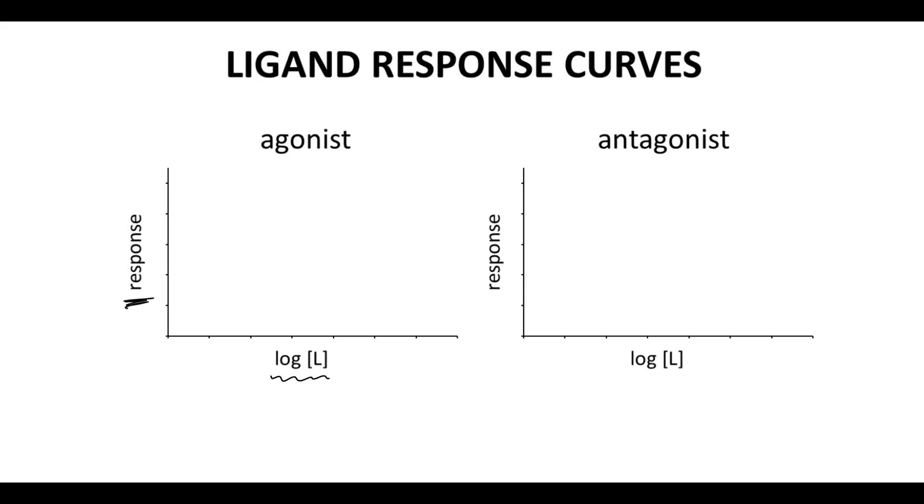For full agonists at low concentration, the left side, the response is zero. At high concentration, the response rises to 100%. In between, we follow a sigmoidal shape. At the point of inflection, which occurs at the halfway point on the y-axis, the x-axis corresponds to something called the log EC50. The EC50 is the concentration C of the ligand required to get a 50% effect.